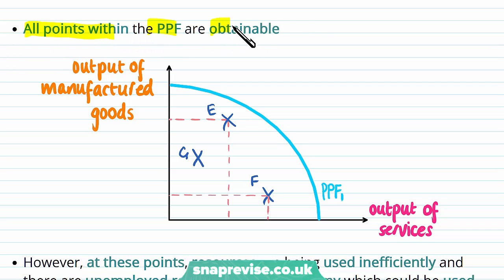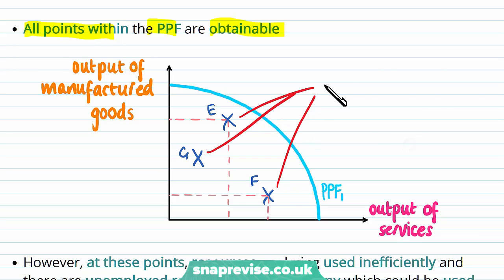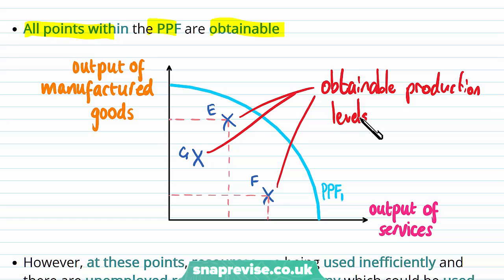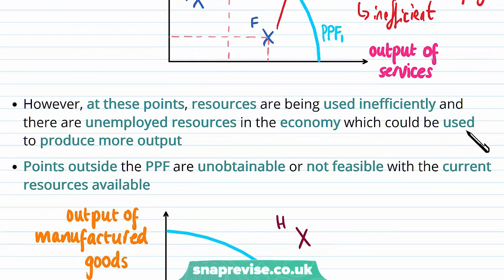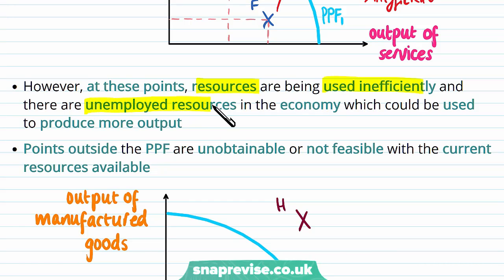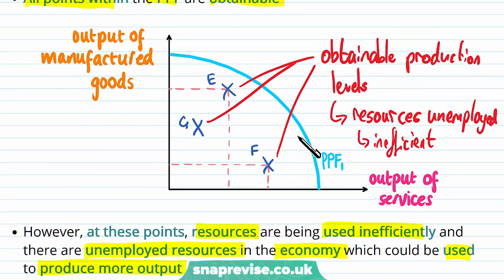All points within the PPF curve — such as points E, G, N, F — that are towards the origin or to the left of the curve are all possible production levels, so we describe them as obtainable. However, this is not the most efficient point, because we are not on the curve — we are leaving some resources unemployed or left over, and hence it is inefficient since we are not producing to our maximum output. These resources are being used inefficiently and there are unemployed resources within the economy which could be used to produce more output.